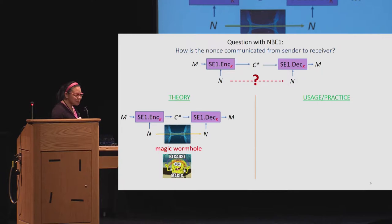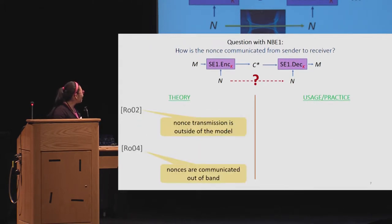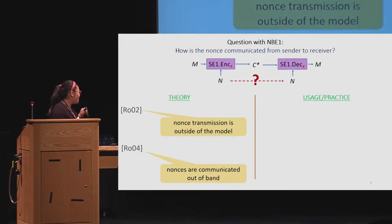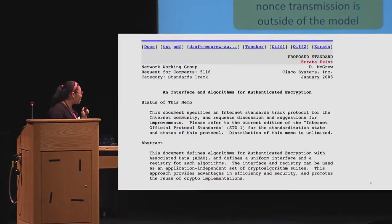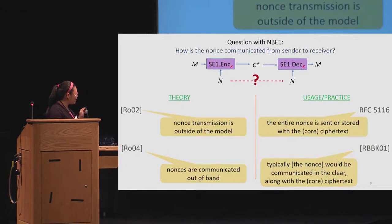In practice, we haven't figured out the wormhole yet, so we send the nonce in the clear with the ciphertext — seems like a simple solution. The original Rogaway paper states that nonce transmission is kind of outside the model, out of band. But RFC 5116, which talks about how you should implement AEAD, says to send it with the ciphertext and you should be fine.